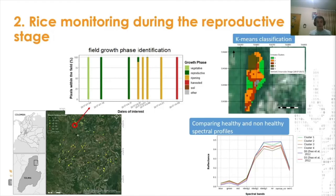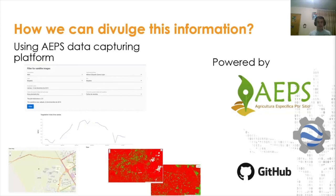We averaged the spectral information for each cluster and compared them with the spectral profiles referenced in literature for healthy and unhealthy rice. This information allows us to inform farmers about heterogeneous plant development inside their crop fields during critical stages. This information must be communicated in a precise and friendly way. We are developing a visualization model that integrates satellite images into our data capturing platform called AEPS, where technicians and farmers can query data for a specific place and planting date, receiving NDVI historical data and seeing how the field developed during the crop period.